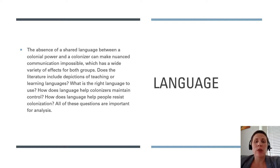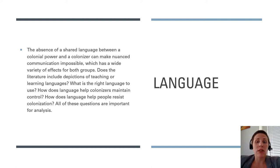Later in the term, we'll see native languages mixed in with English in several stories. For the theme of language, look for the way each author chooses to use language — what is translated, what is not translated, and what seems to be the ultimate message of those choices. The absence of a shared language between a colonial power and colonized people can make nuanced communication impossible. Does the literature include depictions of teaching or learning languages? How does language help colonizers maintain control, and how does language help people resist colonization?